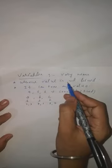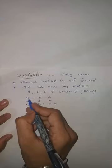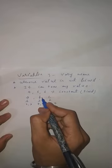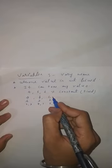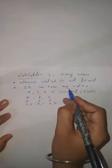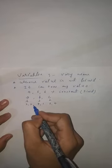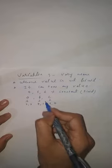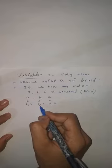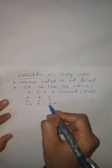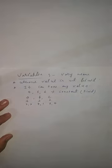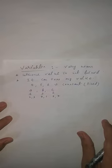Variable means whose value is not fixed. The value of a is not fixed — this is variable. Value of b is not fixed — this is variable. Value of c is not fixed — this is variable. It can take any value: for a you can take two or three, for b you can take four or one, for c you can take five or four.